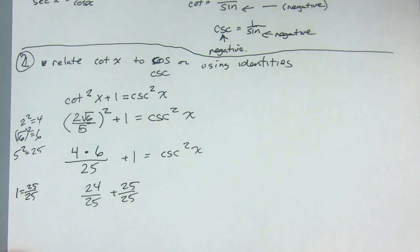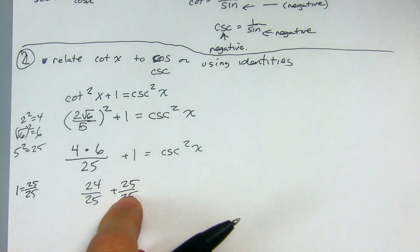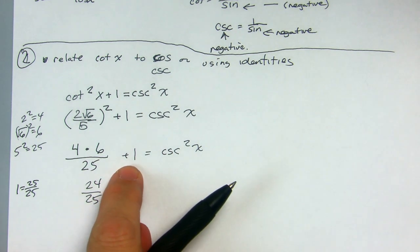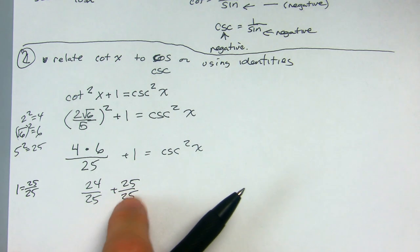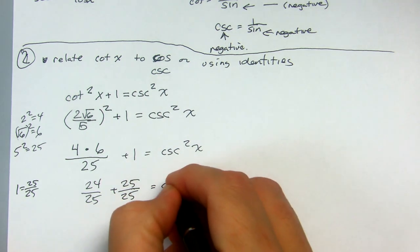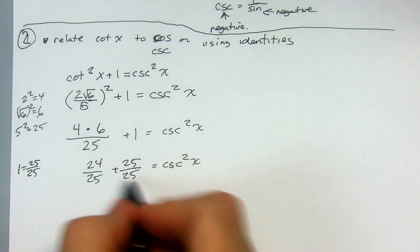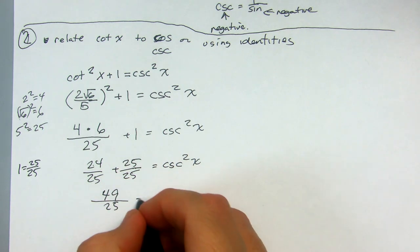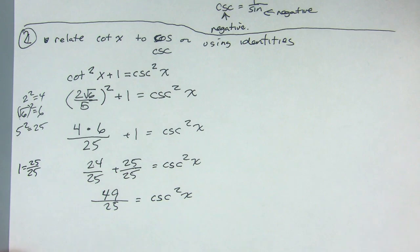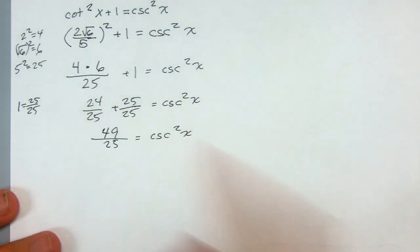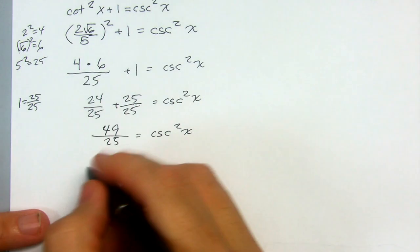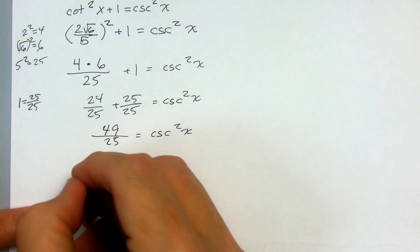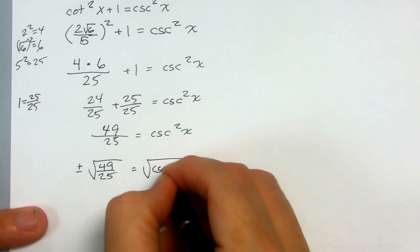I'm going to use the idea that 1 equals 25 over 25 — that's a big thing you'll have to use a lot when doing identities with trig. You're going to have to use 1 in a lot of different creative ways. So cosecant squared of x equals 24 over 25 plus 25 over 25. Adding those up: 24 plus 25 is 49 over 25 equals cosecant squared of x. I'm happy because 49 and 25 are both perfect squares. So I take the square root of 49 over 25.